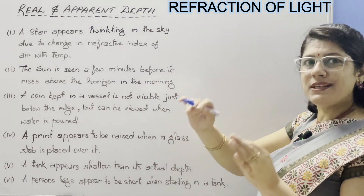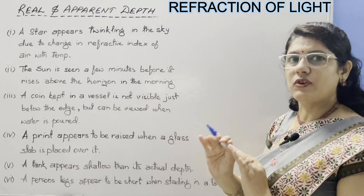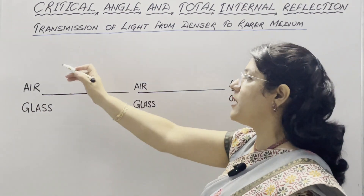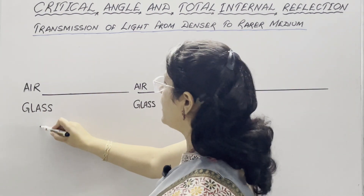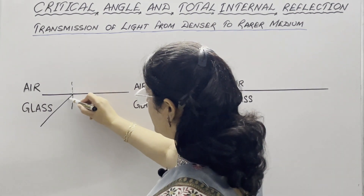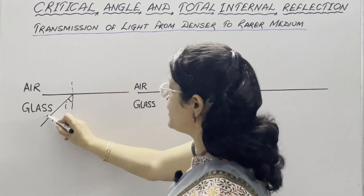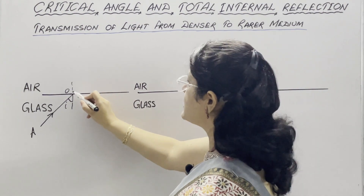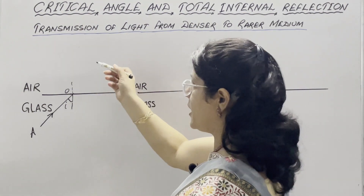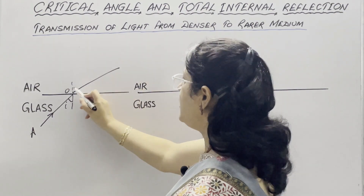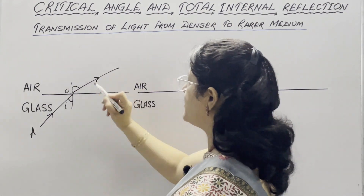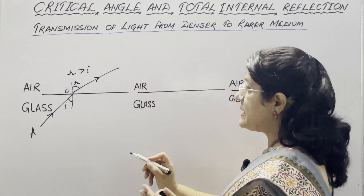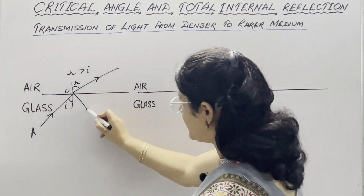Now we are going to discuss when light is travelling from a denser medium — glass — to a rarer medium — air — making a small angle of incidence i with the normal. Suppose this is the angle of incidence i and this is the incident ray AO. When it strikes the surface, it is partly refracted in the rarer medium air and bending away from the normal. Angle of refraction r is greater than i, and some part of this light is reflected back into the same medium.